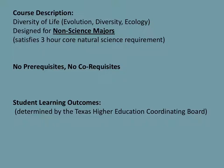It does satisfy the three-hour core natural science requirement that many degree plans have. You may also need to take a lab, which is a separate course taught face-to-face — it is called 1109 — so check with your degree plan and advisors to make sure you're taking what you need to graduate. There are no prerequisites and no co-requisites. The student learning outcomes are determined by the Texas Higher Education Coordinating Board and are listed in detail on your actual syllabus.